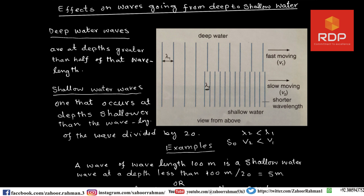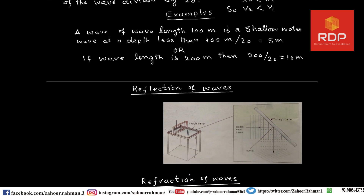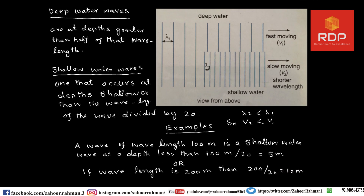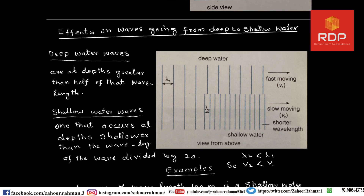Now a very important property: reflection. We will discuss reflection and we will also discuss it using the ripple tank. Let us first technically talk about the effects on waves going from deep to shallow water — we discussed it, but let us go into a bit more detail. If you place a glass plate in the tray so that a region of shallow water is created — you create it by first finding the wavelength and dividing by 20 — then you can observe the behavior of shallow water waves.